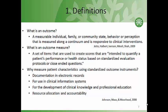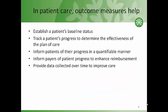There are a variety of reasons why patient characteristics should be measured using standard outcome measures. It helps with documentation and electronic records, facilitates use in clinical information systems, supports development of clinical knowledge and professional education, and allows resource allocation and accountability in patient care. In patient care specifically, it helps establish a patient's baseline status, track progress, and determine the effectiveness of the plan of care. It helps inform patients of their progress in a quantifiable manner, informs payers to enhance reimbursement, and provides aggregate data over time to improve care.